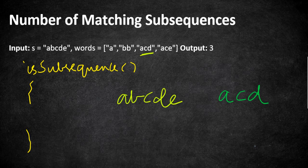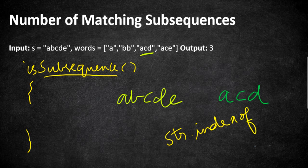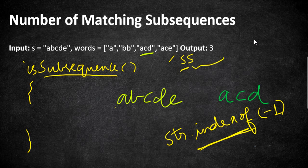Before going to the main function, let's first refine the isSubsequence function. Instead of iterating the whole word character by character, we are going to use the String.indexOf method to shorten the search process. The indexOf method returns the index of a character if it matches, or minus one if it does not. So if a character is not found at all, we don't have to iterate the rest. For example, if the words array has a word 'ss', the first character 's' is not in 'abcde', so indexOf returns minus one immediately.